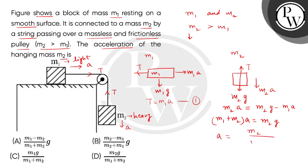That is M2 divided by M1 plus M2 multiplied by G. So for acceleration, the correct answer is option number D.